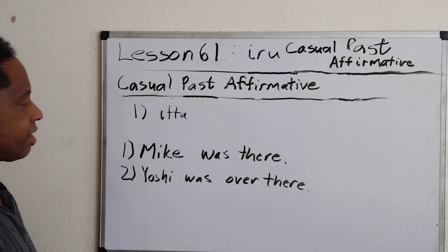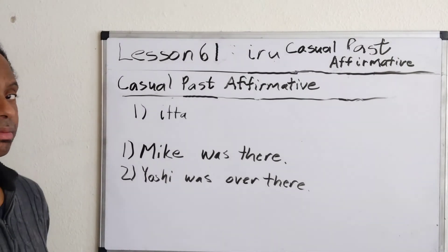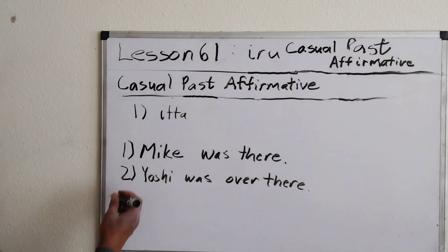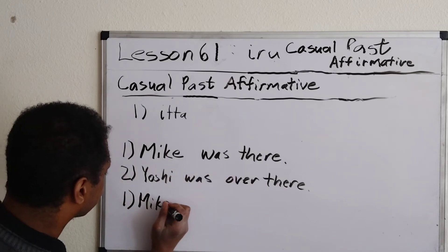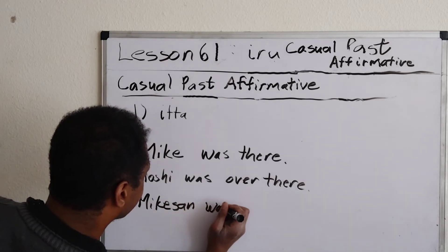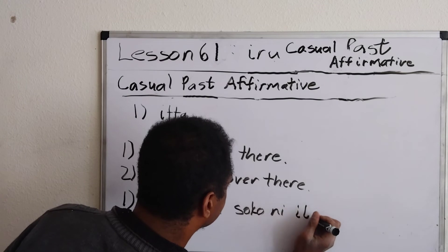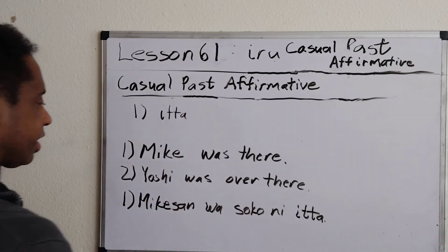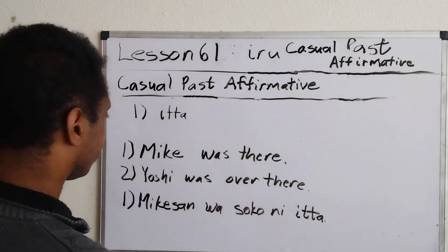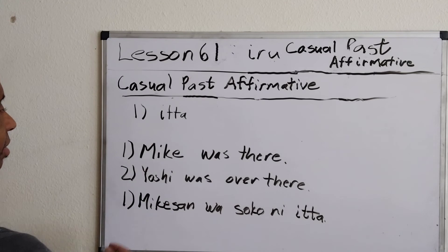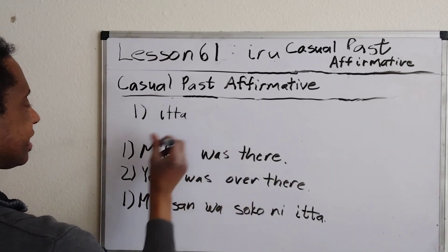First one: Mike was there. Next one: Yoshi was over there. Okay, let's go over it. Mike-san wa soko ni ita. Remember, 'iru' means to exist — I hope I didn't say 'was' by accident sometimes — but 'ita' means 'existed.'